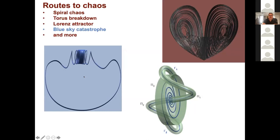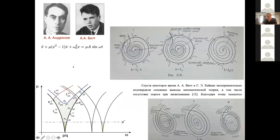Speaking of tori, historically the story begins with the Balthasar van der Pol result on the periodically forced van der Pol equation or generator. The question is what happens with synchronization — when frequencies get phase-locked or frequency-locked. Using a truncated van der Pol equation, the problem reduces to the following case.